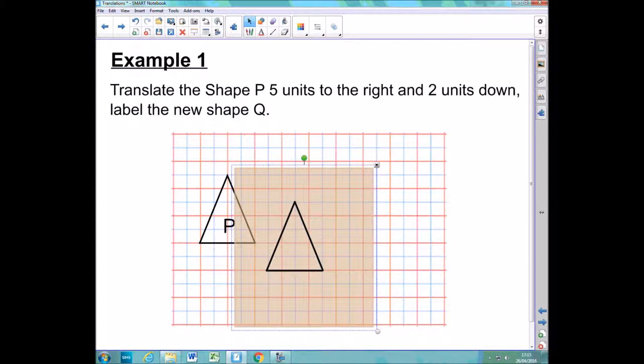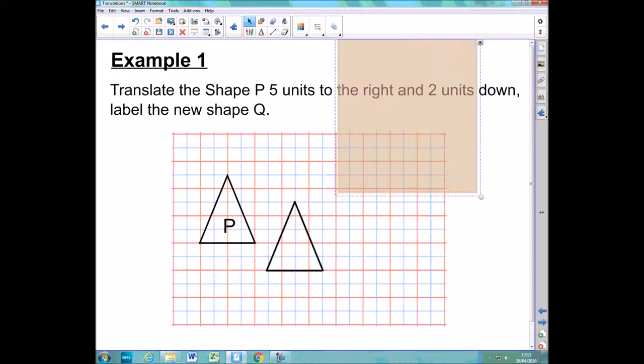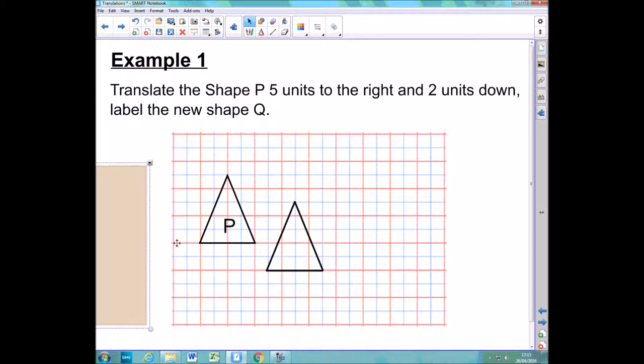And now all I need to do is be really careful and remove the tracing paper and draw my shape underneath. Then label that shape Q. So this is an example that could have come up on a foundation paper.